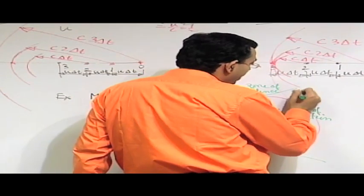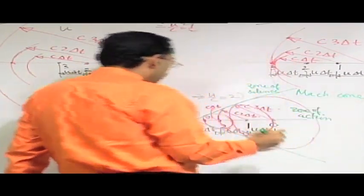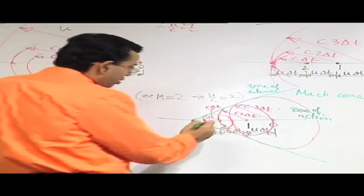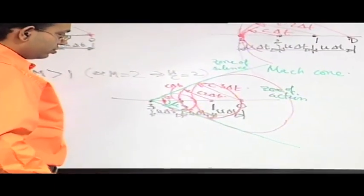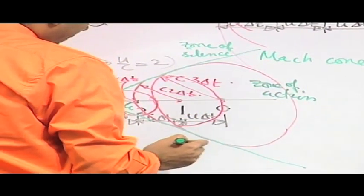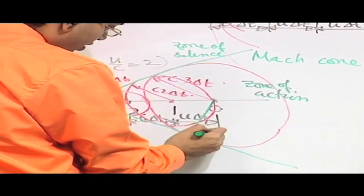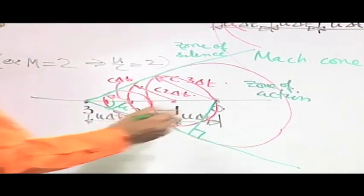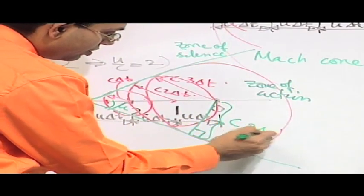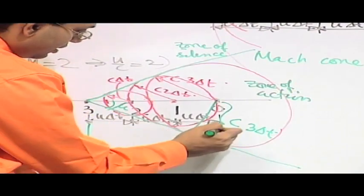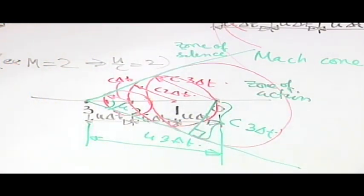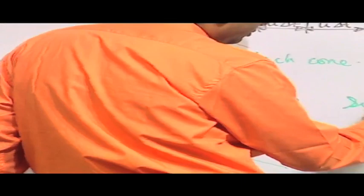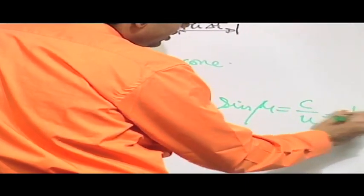This cone is known as the Mach cone. The semi-vertical angle mu of this cone can be obtained easily. If you draw a tangent to the circle, the distance c into 3 delta t and u into 3 delta t form a right triangle. So sin(mu) = c/u = 1/Mach number.